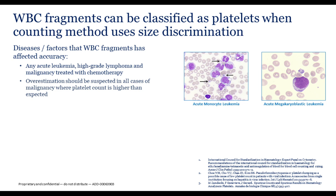WBC fragments can also be classified as platelets. Smear review shows small white blood cell fragments around white blood cells. In any acute leukemia, high-grade lymphoma, or malignancy treated with chemotherapy, these can be a major contributor to a falsely increased platelet count. You should always be alert that overestimation should be suspected in all cases of malignancy where the platelet count is higher than expected.